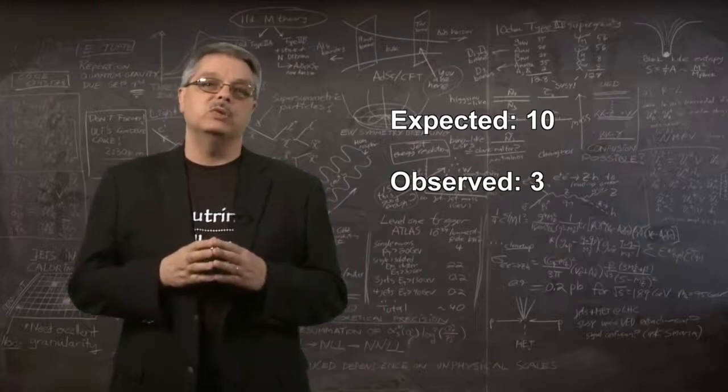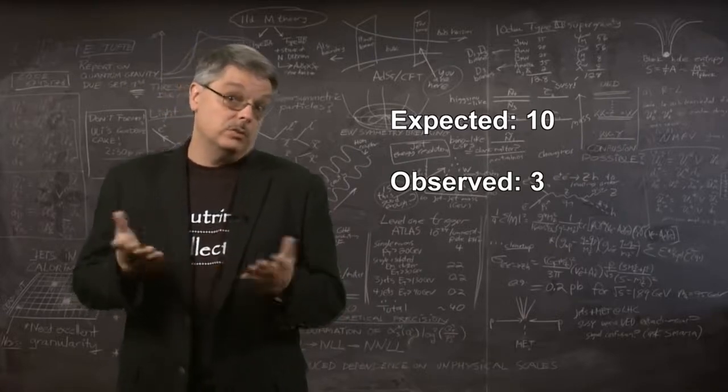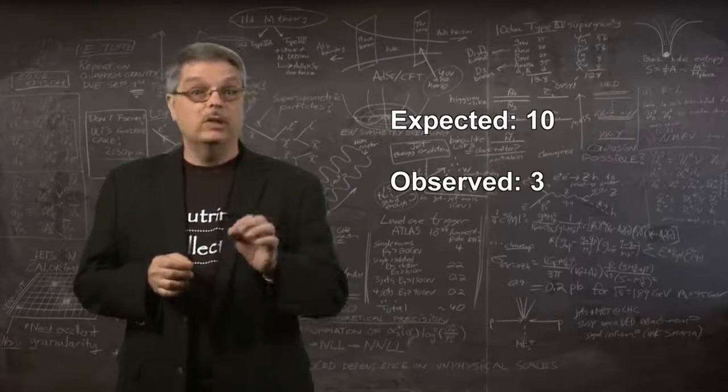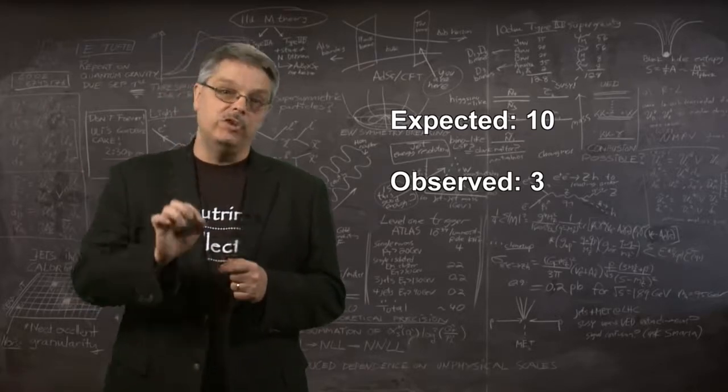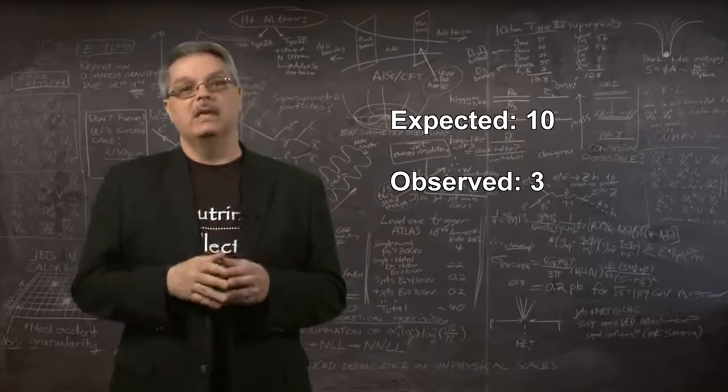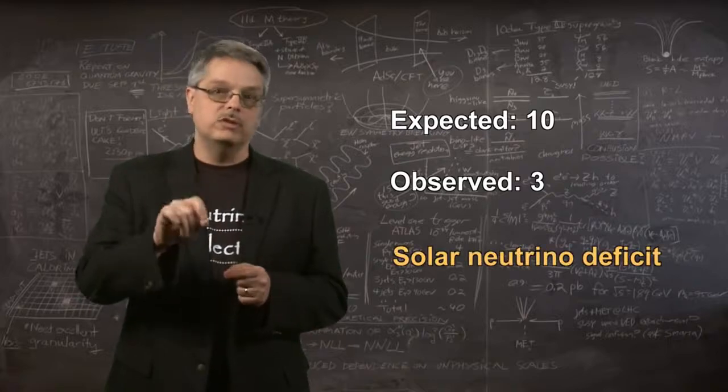The easiest explanation was that either the prediction or the measurement was wrong, and yet many follow-on experiments confirmed his results. He was detecting fewer neutrinos than expected. This came to be called the solar neutrino deficit.